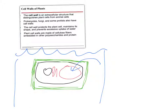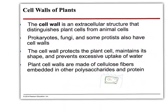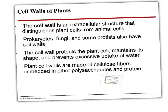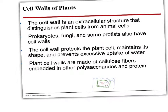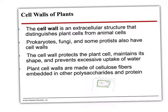The plasma membrane is going to push out and eventually run into the cell wall, so it's not going to be able to burst anymore. Prokaryotes, fungi, and some protists also have cell walls. They protect, maintain shape, and prevent excess uptake of water.